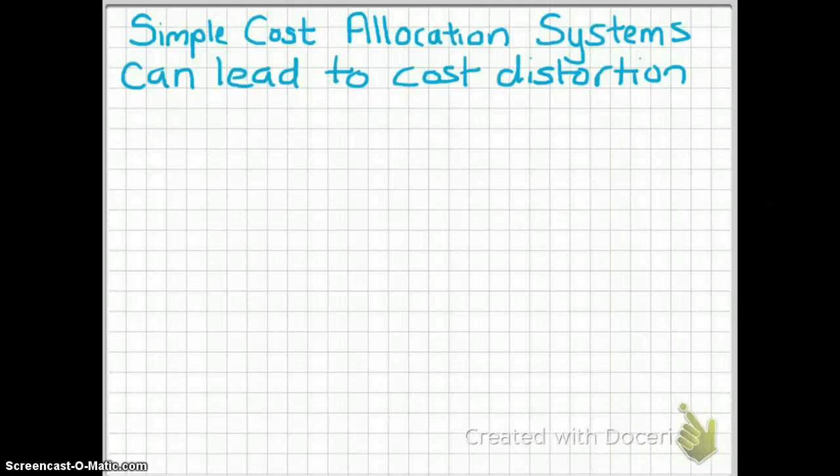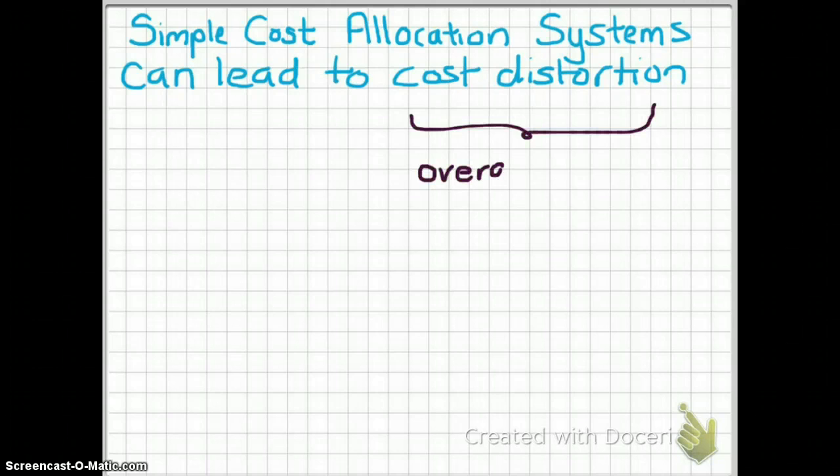Let's do a quick recap. You know that simple cost allocation systems can lead to cost distortion. Cost distortion is when we have over-allocated and under-allocated manufacturing overhead.